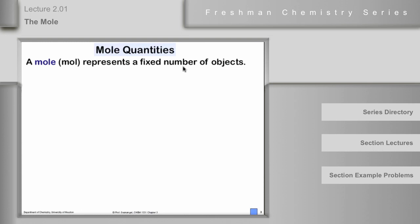I would very much like it if the University of Houston had an endowment of one mole of dollars. It would make us by far the richest university in the universe, as far as we know. But we don't. A mole turns out to be an extraordinarily large number because it's designed to help us handle quantities of chemical compounds.